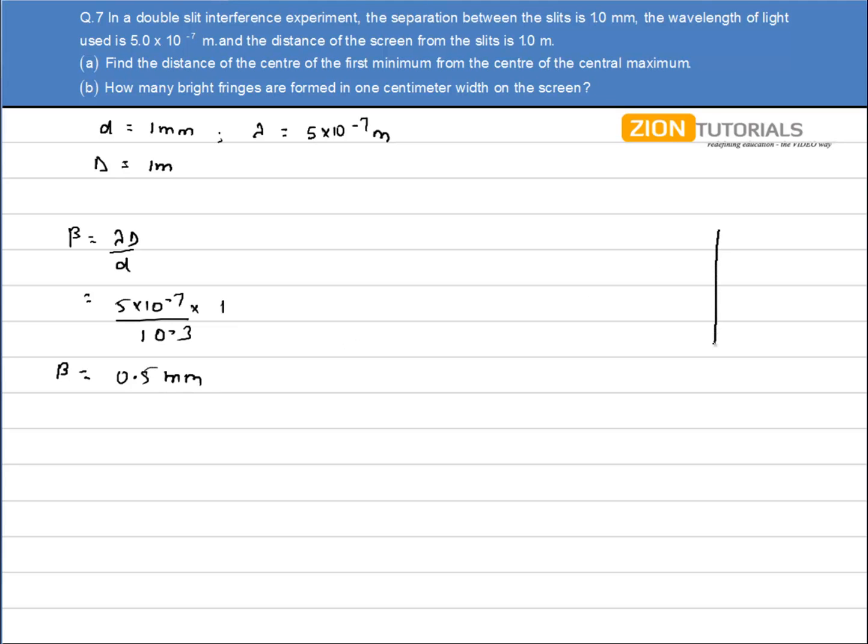Now let's say this is my screen. I do have two slits, so there will be a constructive interference at the center. And the graph will be something like this.